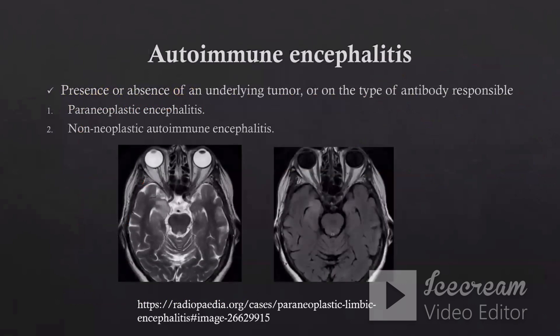Let's move to autoimmune encephalitis. We have two types: either paraneoplastic encephalitis, which occurs in association with another tumor occurring in the whole body — for example, the patient has bronchogenic carcinoma and at the same time presents with paraneoplastic encephalitis. Non-neoplastic autoimmune encephalitis is considered when the patient has an autoimmune disease or disorder, for example systemic lupus erythematosus, and at the same time is complaining of autoimmune encephalitis.